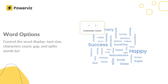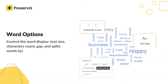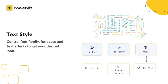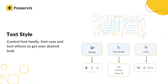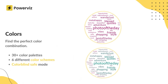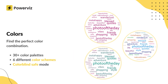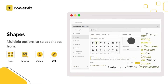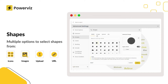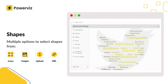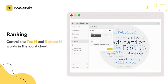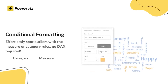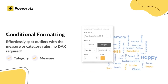The word cloud is a visualization technique commonly used to analyze keywords, free-form text and speeches. It utilizes color and size to represent the importance of a tag. PowerWiz word cloud stands out as one of the most advanced word cloud visualizations available, offering a range of features for customization including shapes, ranking, excluding words, numbers, characters and conditional formatting.